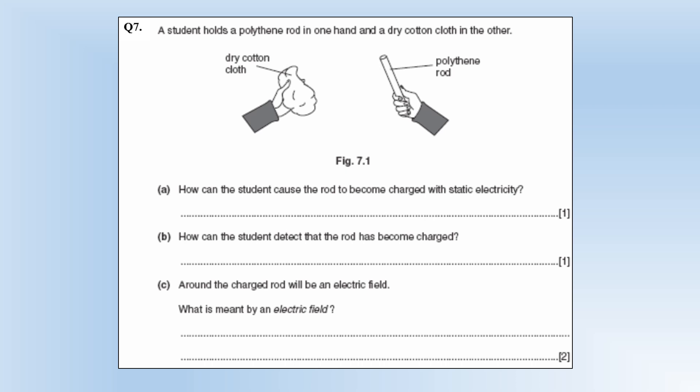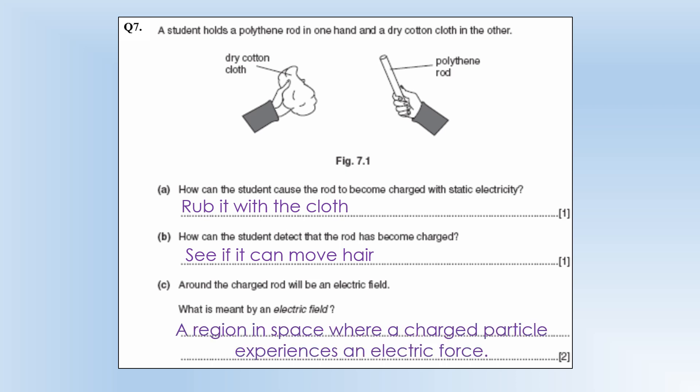A student holds a polythene rod in one hand and a dry cotton cloth in the other. How can the student cause the rod to become charged with static electricity? Well you rub them together. Fairly simple. How can the student detect when the rod has become charged? So there is a piece of kit called a gold leaf electroscope that would work. But a much simpler way would just put it near one of your hairs and see if they move because of it. Or some pieces of paper and see if they move. There's a few tests you can do. Around the charged rod will be an electric field. What is meant by an electric field? Well it's the region in space where a charged particle experiences an electric force.